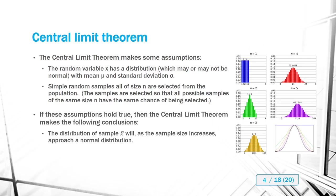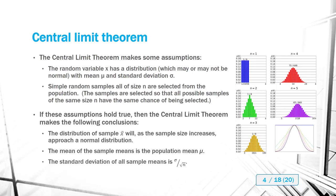The distribution of the sample mean X-bar will, as the sample size increases, approach a normal distribution. The mean of the sample means is the population mean, mu — we also saw that with our dice rolling experiment. And finally, the standard deviation of all sample means is sigma over the square root of n, where n is your sample size.